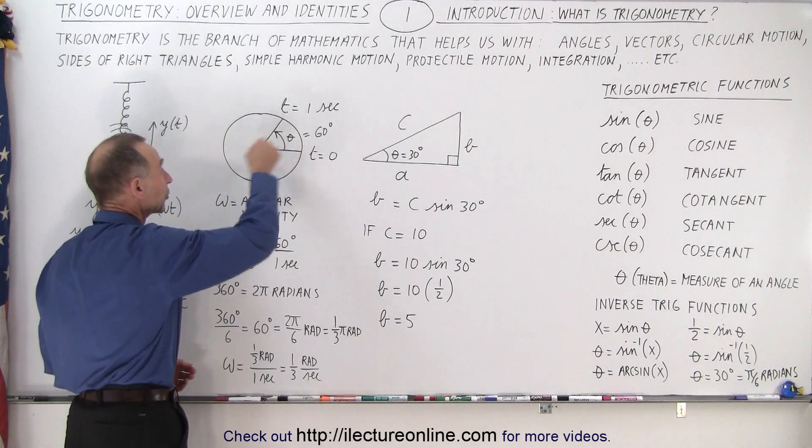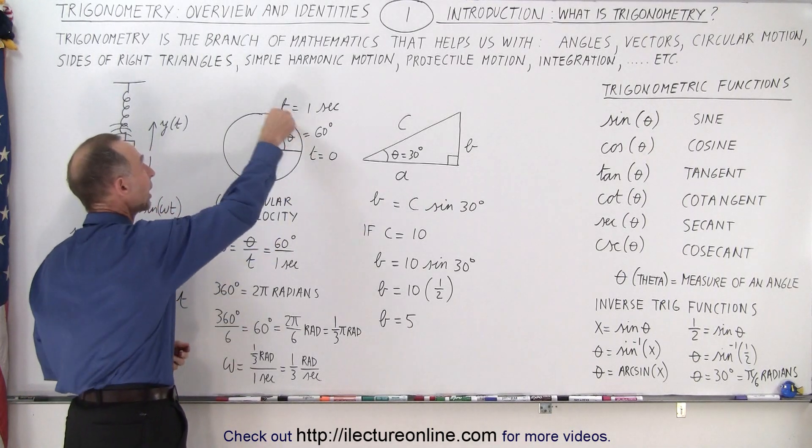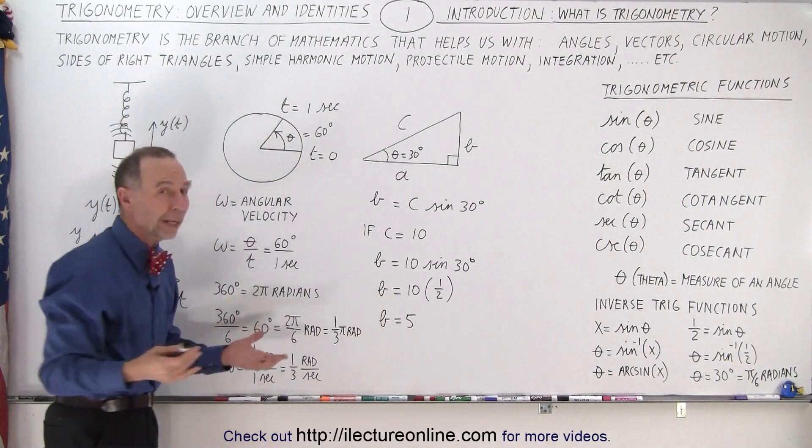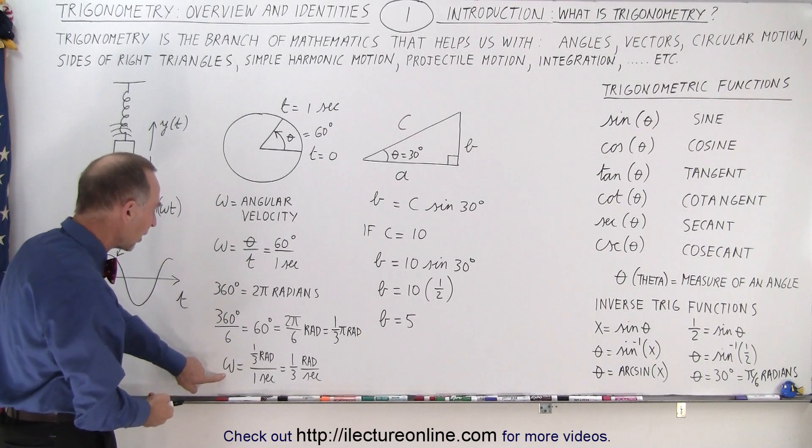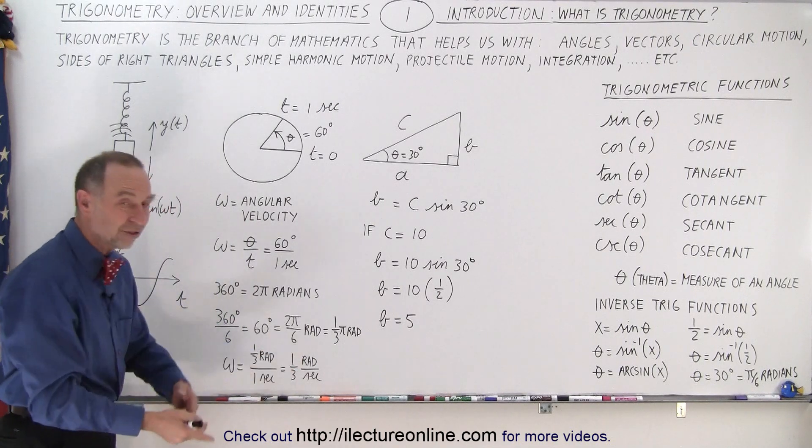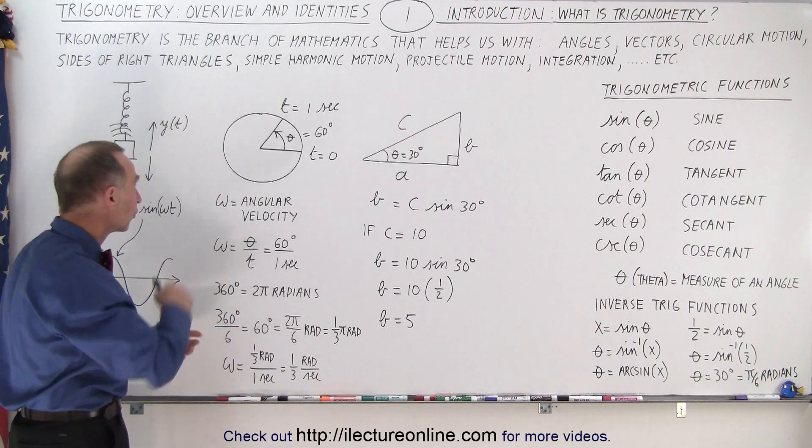We can express the angle in degrees or in radians. One time all the way around the circle is 360 degrees. One time all the way around is 2π radians. So they're both measures of angle. We can say our angular velocity is how many radians per second we cover as we go around in circles.